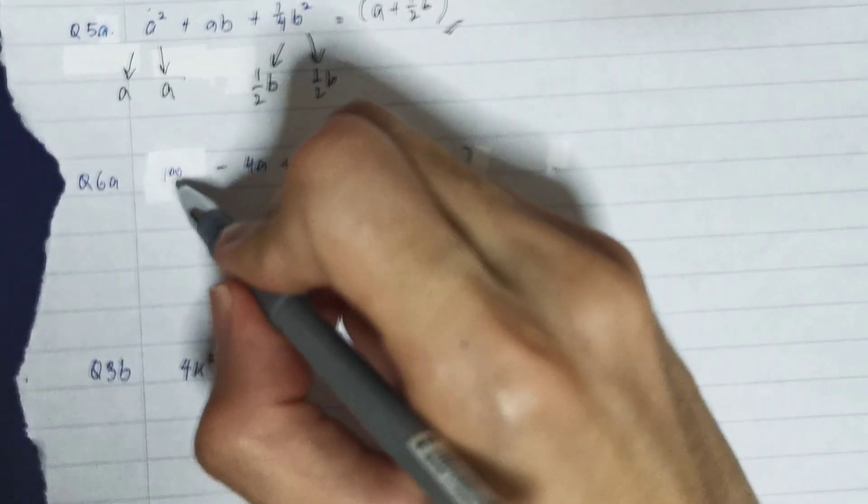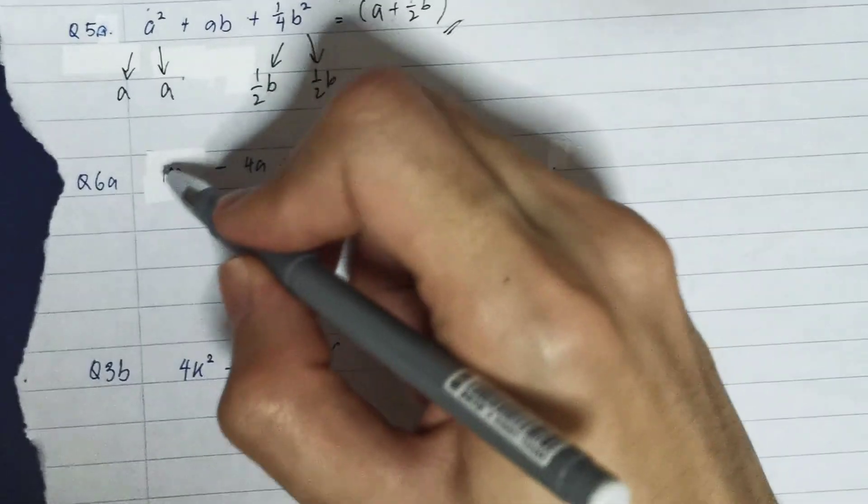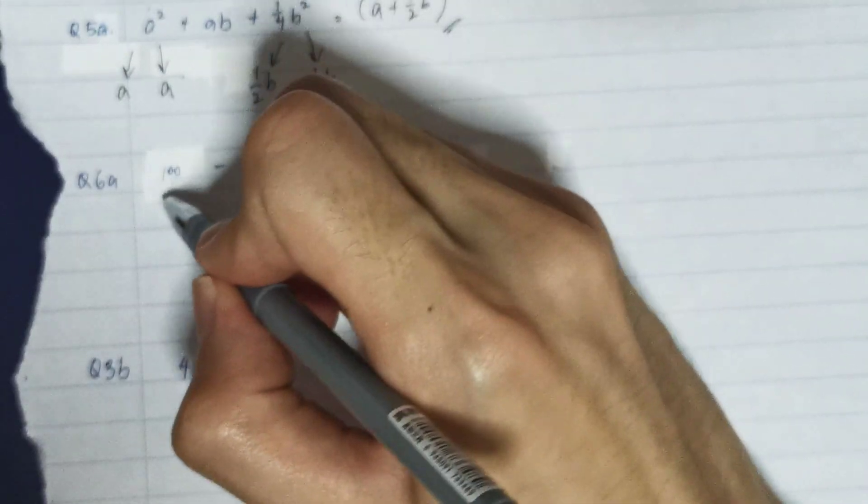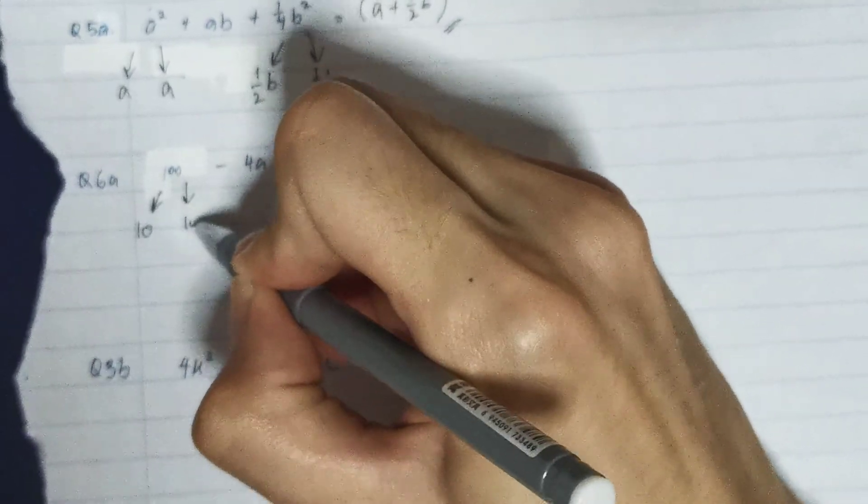So let's check whether the 100 can be written into square, because it's a square number. I know that 100 equals 10 times 10. It's a square number.